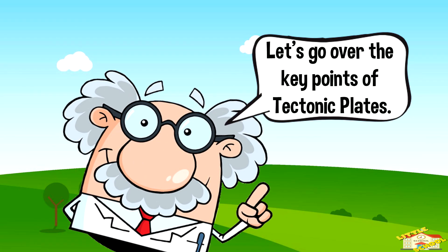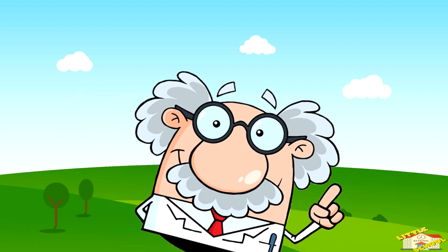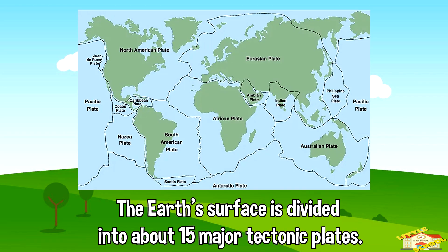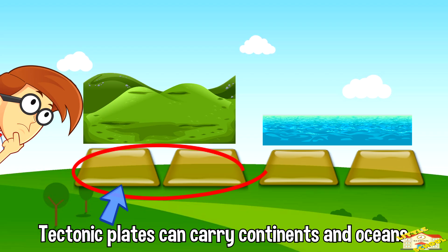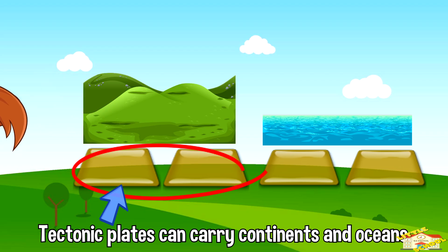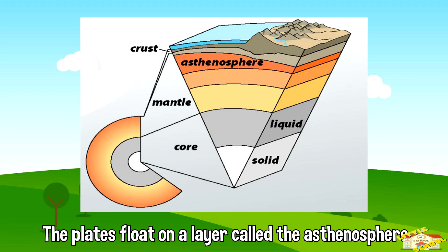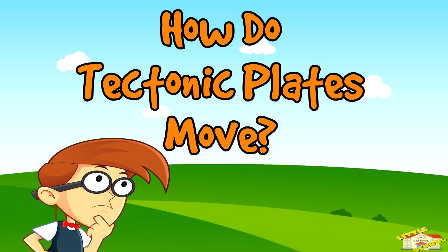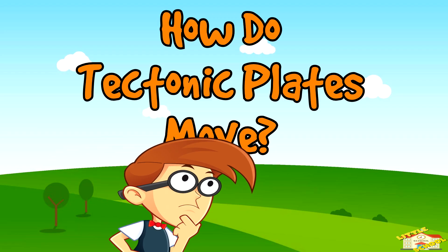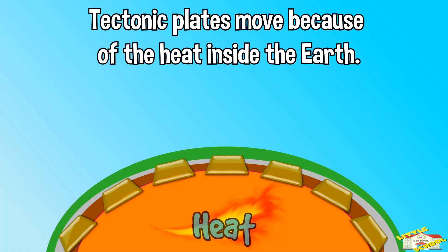Let's go over the key points of tectonic plates. The earth's surface is divided into about 15 major tectonic plates and some smaller ones. Tectonic plates can carry continents and oceans. The plates float on a softer semi-fluid layer underneath called the asthenosphere.